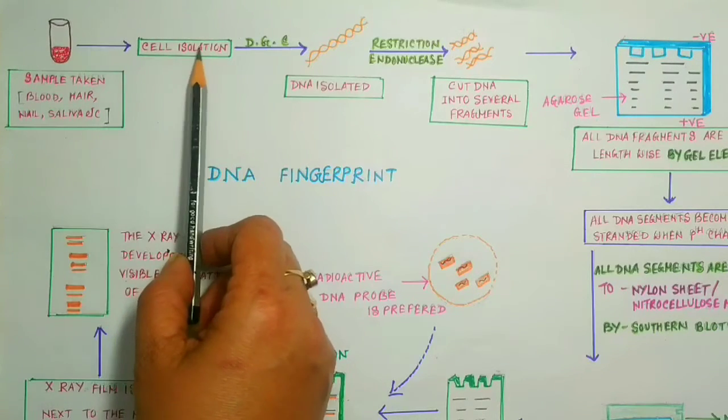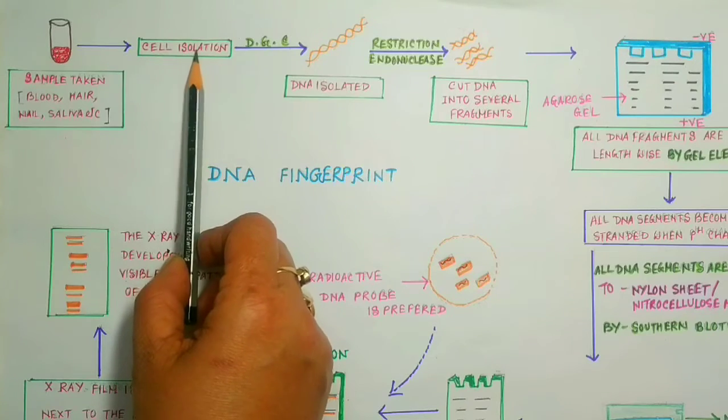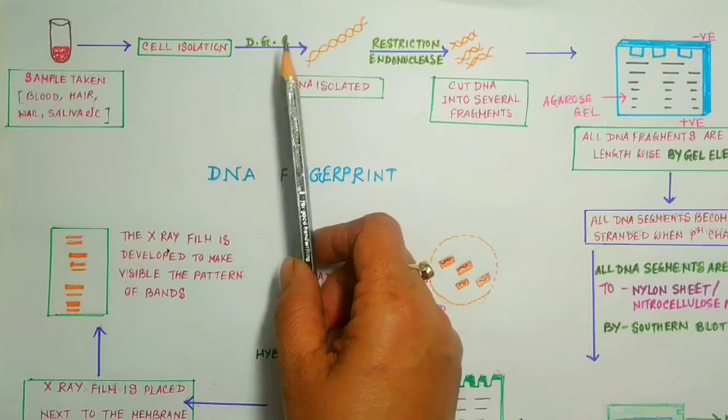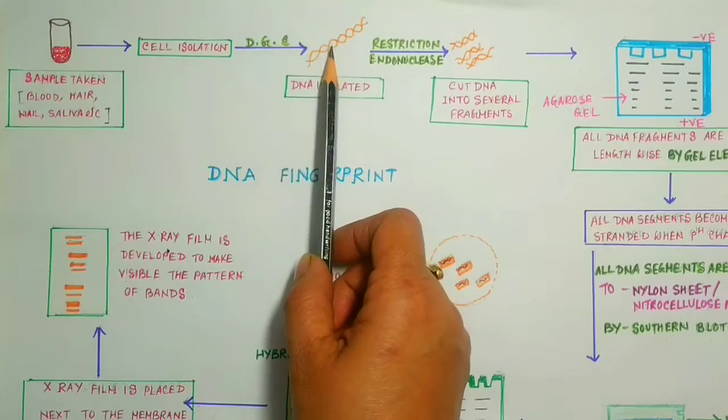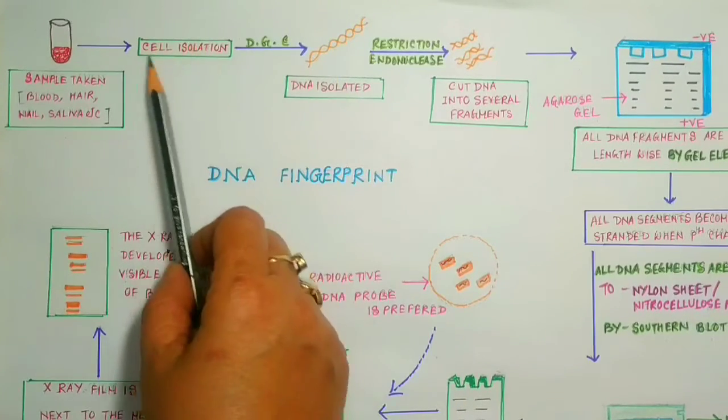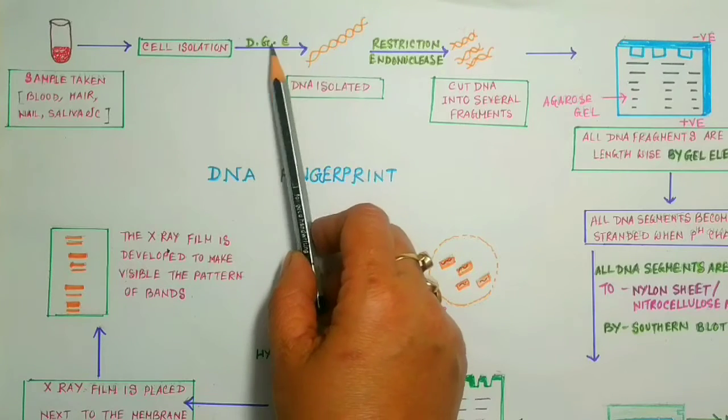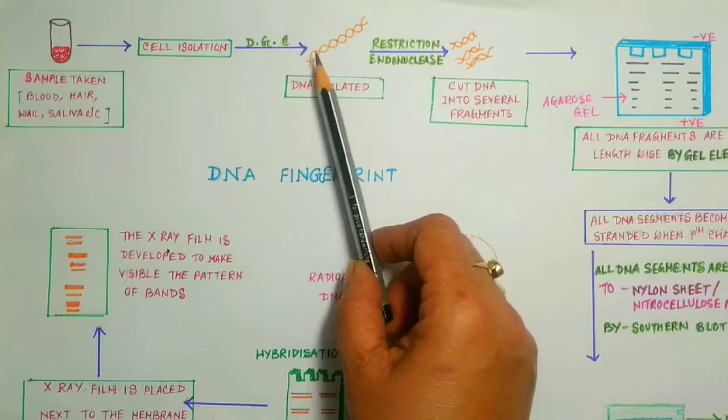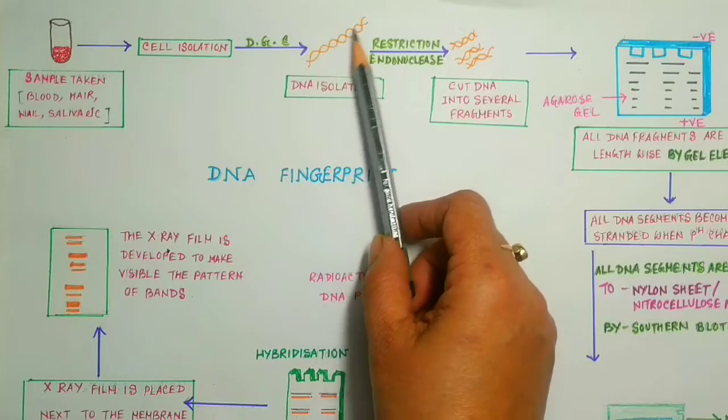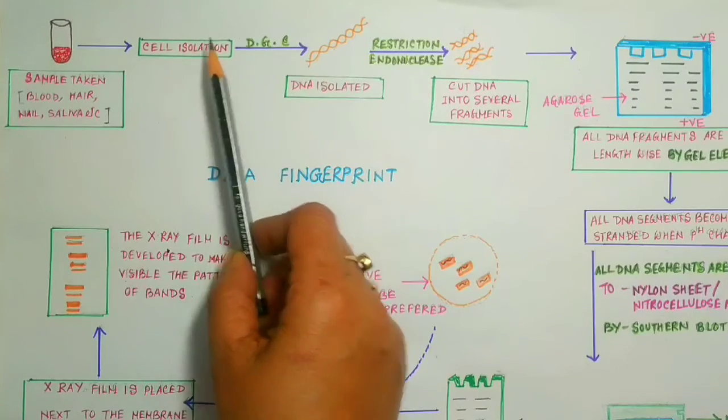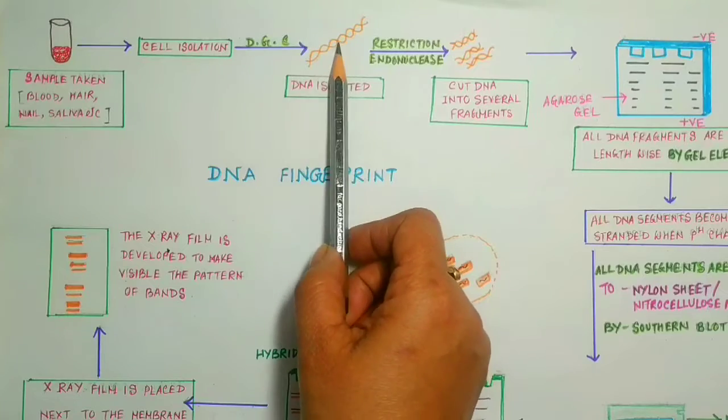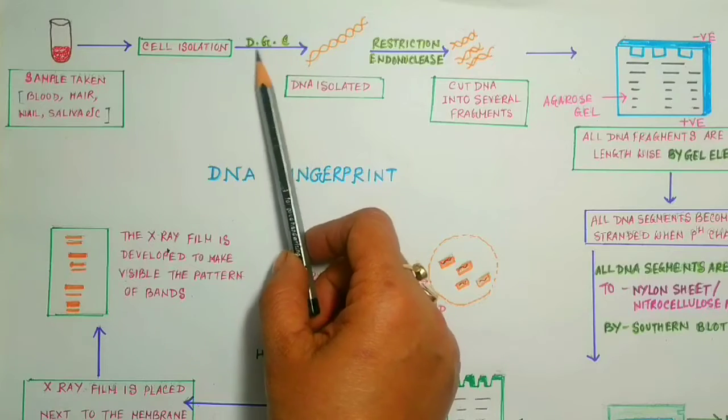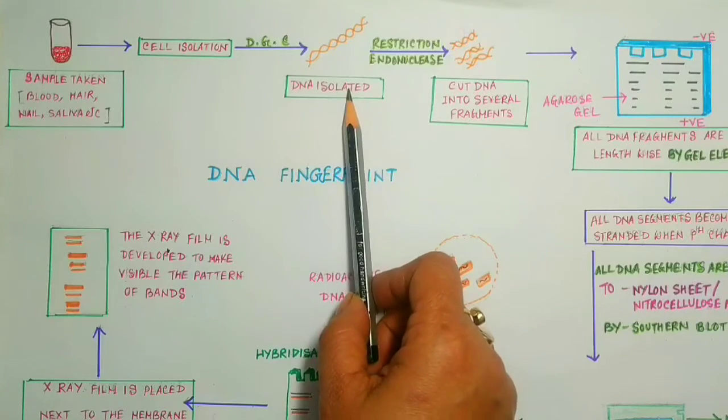Then from the sample, cell isolation occurs where cells are isolated. Then from the cell, since in DNA fingerprint we need satellite DNA part only, by DGC process—density gradient centrifugation process—the strands of DNA are separated from the cell. There are many processes for the separation of DNA from the cell, but in your NCERT book, this process is given. Then DNA is isolated.